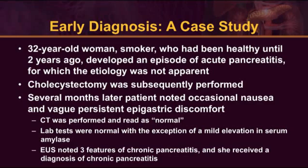She was reevaluated and had a CAT scan, which looked normal. There were the expected postoperative changes after cholecystectomy, but the pancreas and the biliary tree looked normal. Laboratory tests were also normal, with the exception that on a few occasions she had modest elevations in serum amylase. That led to the performing of an endoscopic ultrasound, which was abnormal in that three features were seen — three of the nine — which was suggestive of chronic pancreatitis, but not definitive.